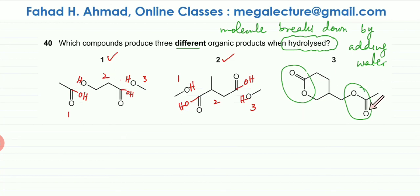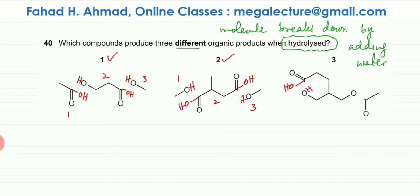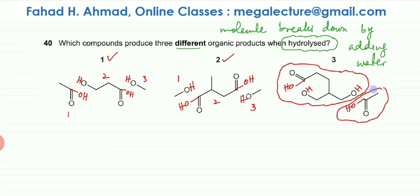Moving to the third option, breaking these ester bonds: the double bond O changes into a carboxylic acid, the single O side changes into an alcohol, and this also changes into a carboxylic acid. However, you'll notice that even after breaking the ester links, this molecule is still intact — still one connected molecule. So they are basically just one and two molecules, not three. Option three is not correct because the molecule remains connected and hasn't broken down into three separate molecules.